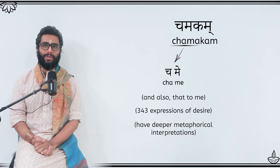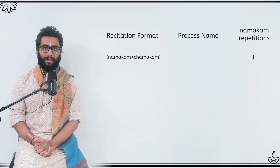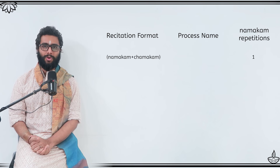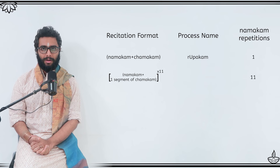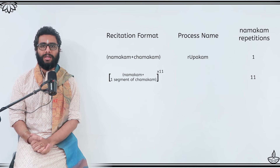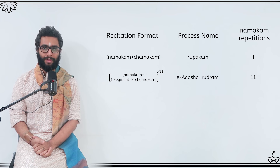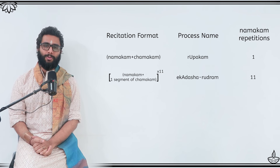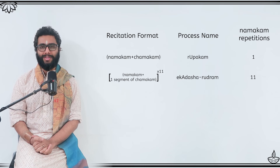Let us look at how these two components of Rudradhyayaha are chanted in practice. One recitation of the entire Namakam followed by the recitation of the entire Chamakam is called Rupakam. Chanting the entire Namakam once, followed by the first anuvaka of Chamakam, and then repeating this process 10 more times for each of the next 10 anuvakas of Chamakam, is called Ekadasharudram. As you can see, the idea here is to maximize the intensity of invocation before we get to the part where we seek fulfillment.